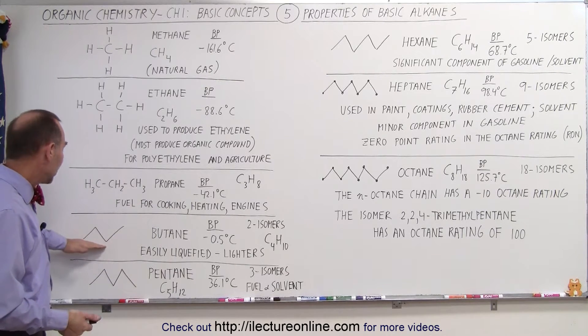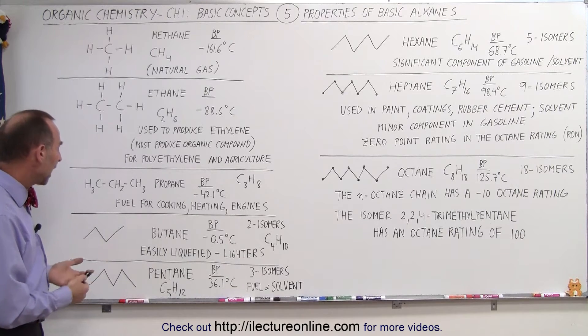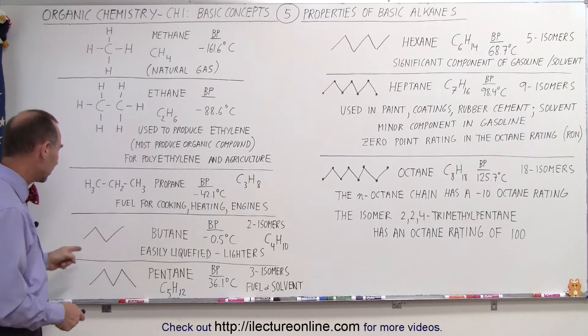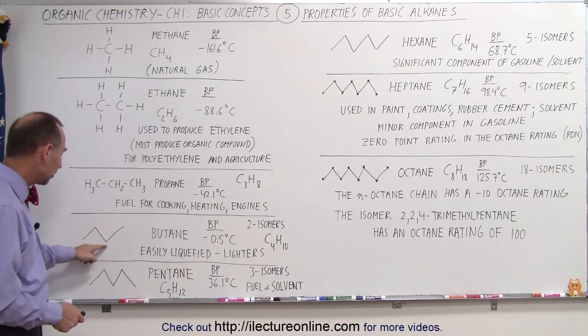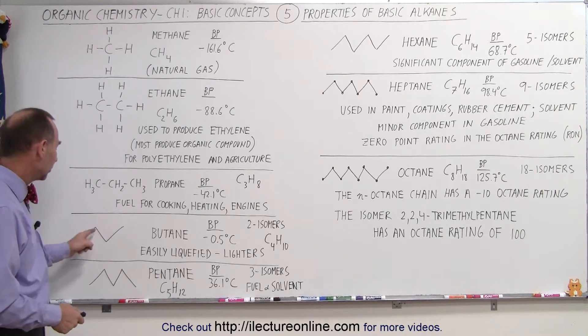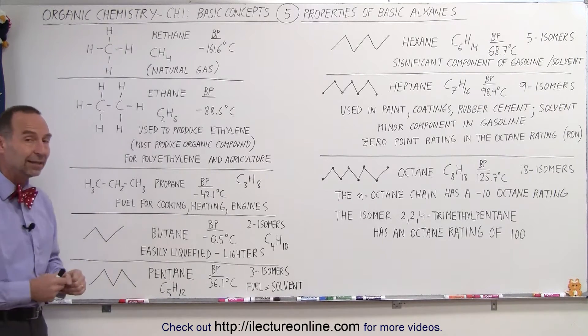The next alkane molecule has four carbons and notice I use a different notation again. Each corner represents a carbon so one, two, three, four carbons. Three carbon single carbon bonds so it's presented by a single line. If it's a double carbon bond then we put two lines there side by side.